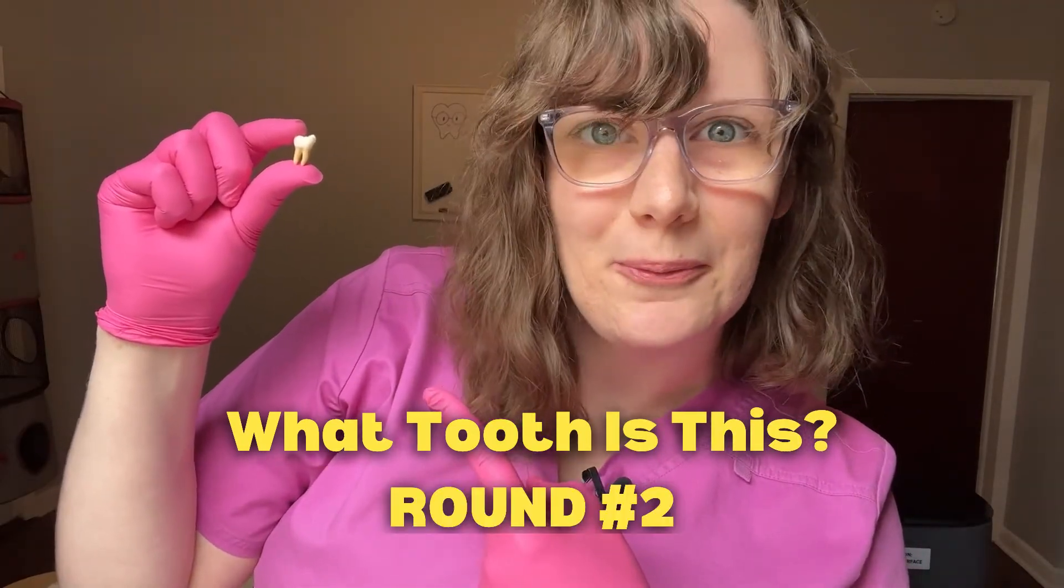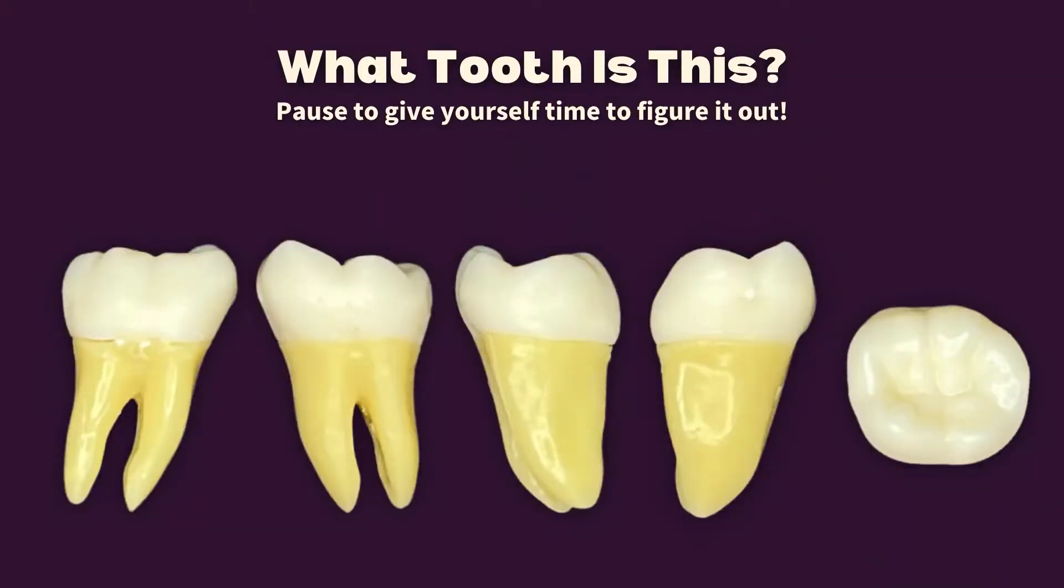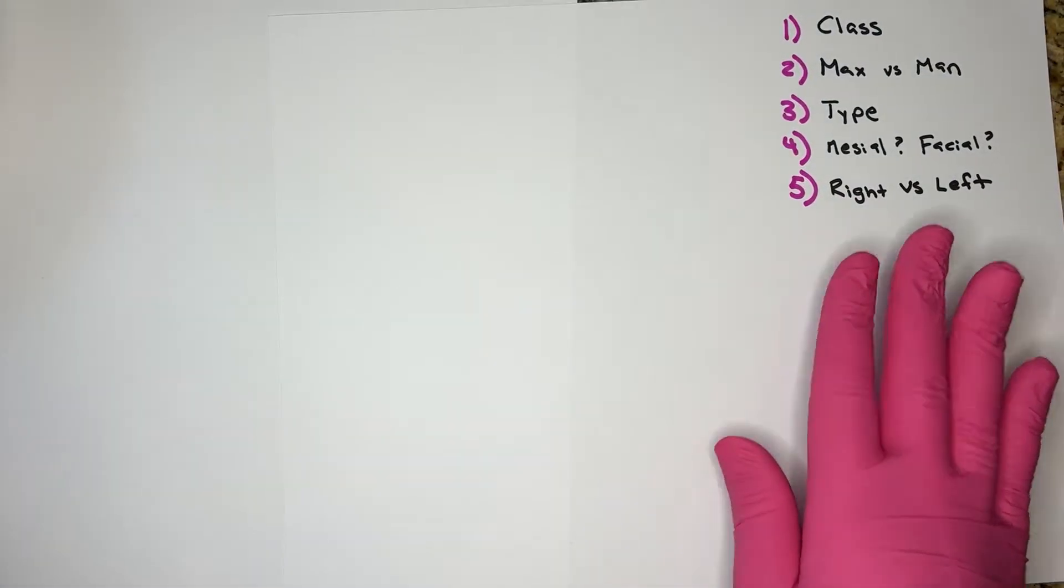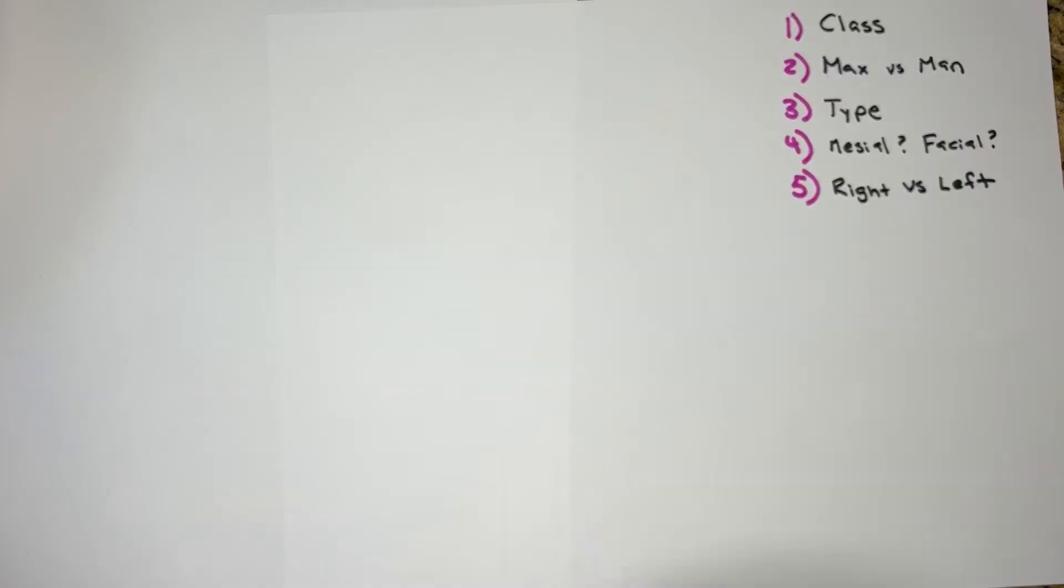What tooth is this? Round two. Let's identify this tooth using the five-step process. Step number one, what class of tooth is this?